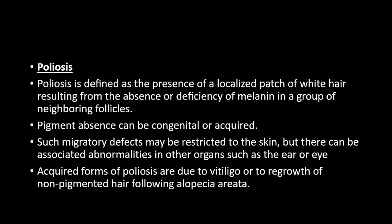Poliosis is defined as a localized patch of white hair resulting from absence or deficiency of melanin in a group of neighboring follicles — it is a localized whitening, not diffuse. The pigment absence can be congenital or acquired. Such migratory defects may be restricted to the skin, but can be associated with abnormalities in other organs like the eyes or ears. Acquired forms of poliosis are due to vitiligo or overgrowth of non-pigmented hair following alopecia areata.